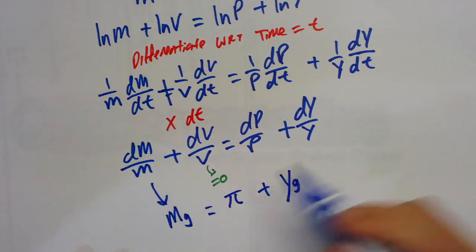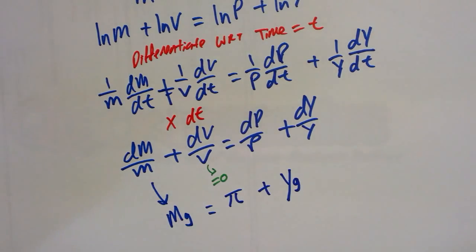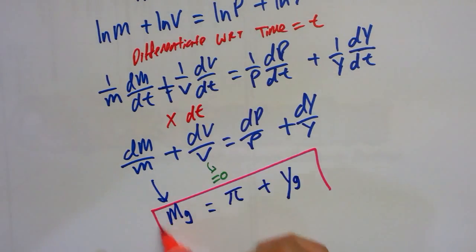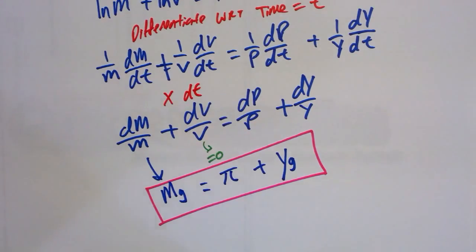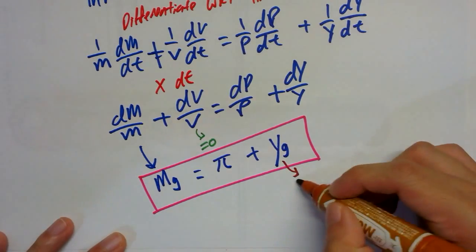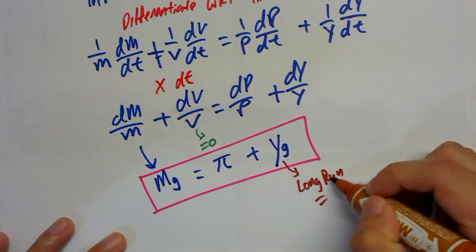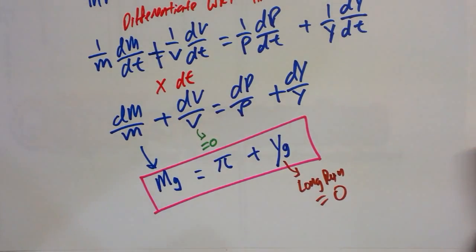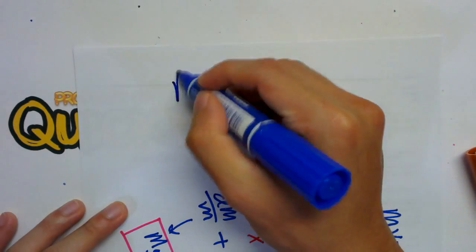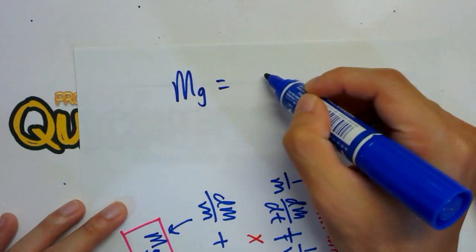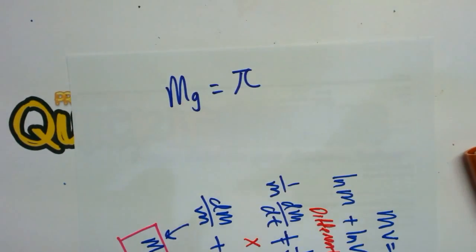So the Quantity Theory of Money has been reduced to: Mg = inflation + Yg. And this is not an assumption — it's a given result from long-run theory. In the long run, output returns to its original full-employment level, so the growth rate of output Yg equals zero. Therefore, the Quantity Theory simplifies to: the growth rate of money equals the inflation rate.